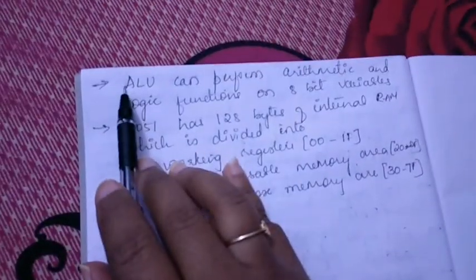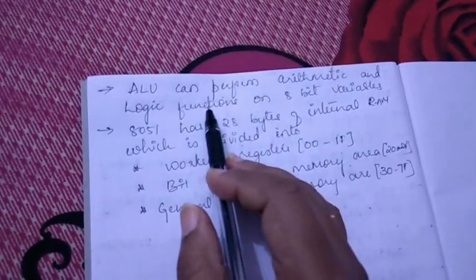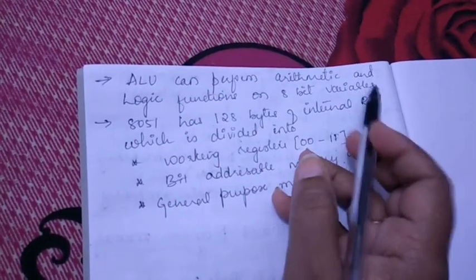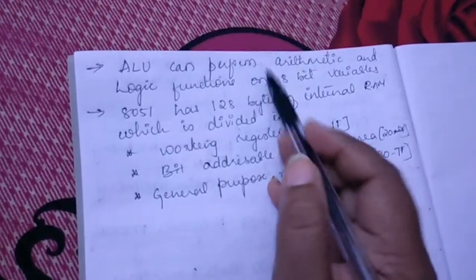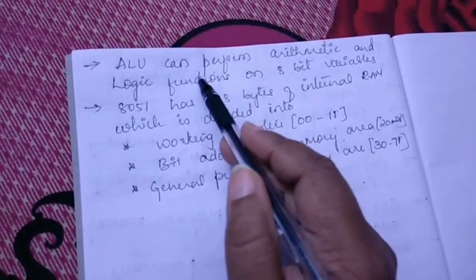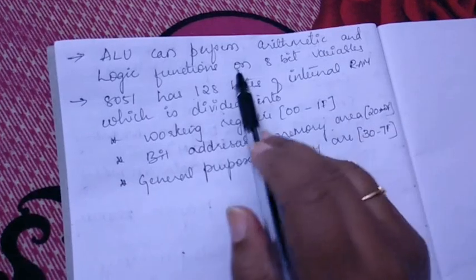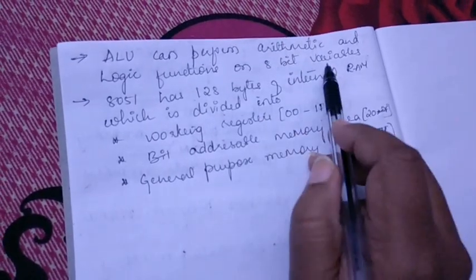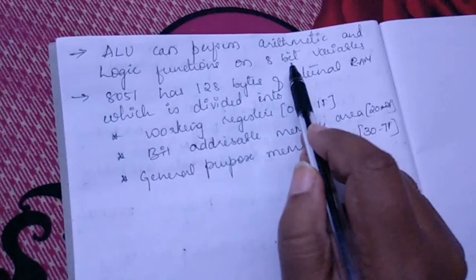Next, ALU can perform arithmetic and logical functions on 8-bit variables. What is the hardware or the unit ALU can perform? ALU can perform arithmetic and logical functions on 8-bit variables only.